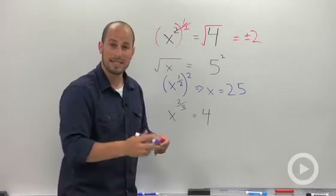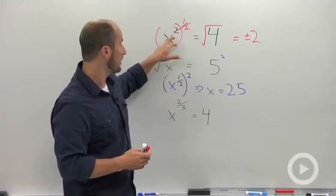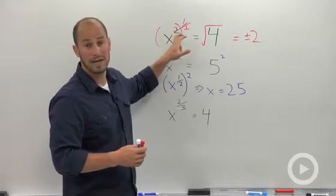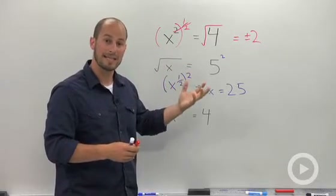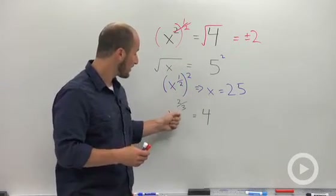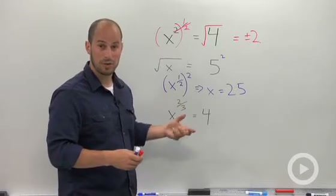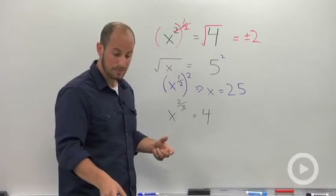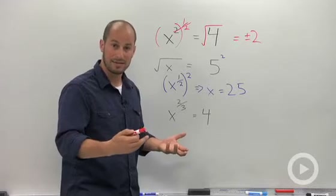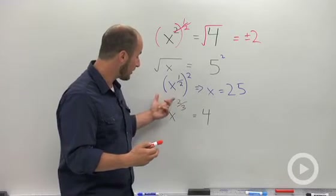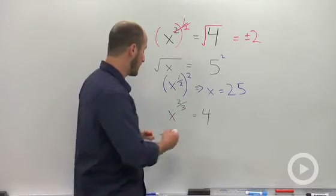In both of these cases, what we're really doing is using our laws of exponents to multiply and get x by itself — a single x. So in something like this, when we're dealing with x to the 2 thirds, we still want to get a single x. We need to figure out what we multiply 2 thirds by to get 1.